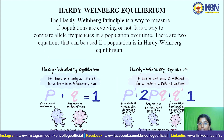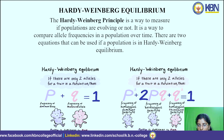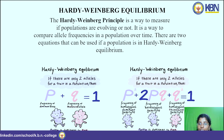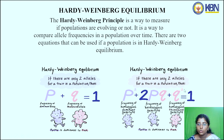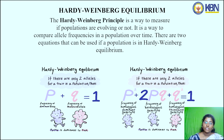The Hardy-Weinberg principle is a way to measure if populations are evolving or not. It is a way to compare allele frequencies in a population over time. There are two equations used if a population is in Hardy-Weinberg equilibrium: p + q = 1, and p² + 2pq + q² = 1. For p + q = 1, if there are only two alleles for a trait in a population, the frequency of the dominant allele is represented by p and the frequency of the recessive allele is represented by q.